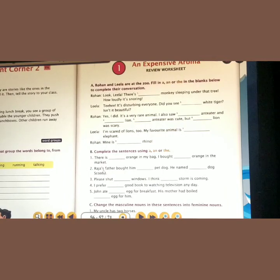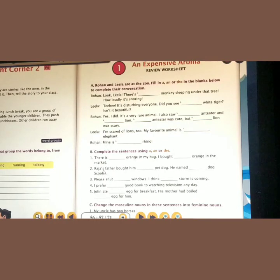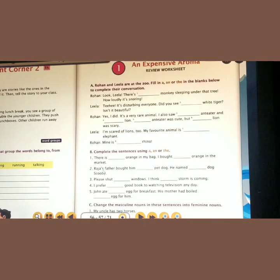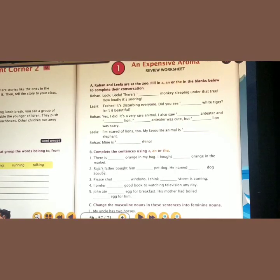Section B: Complete the sentences using A, AN or THE. 'There is dash orange in my bag.' — The word orange begins with a vowel, so the answer is AN — 'there is an orange in my bag.' 'I bought dash orange in the market.' — The noun orange is already mentioned, so we use the definite article THE — 'I bought the orange in the market.' Second: 'Daja's father bought him dash pet dog.' — 'a pet dog.' 'He named the dog Scooby.' — THE dog, a particular dog.